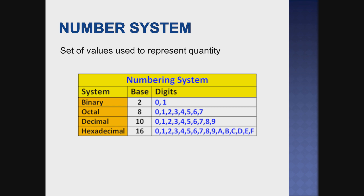Octal, base 8. So the digits lie from 0 to 7. Next, decimal — base 10. The digits are from 0 to 9.